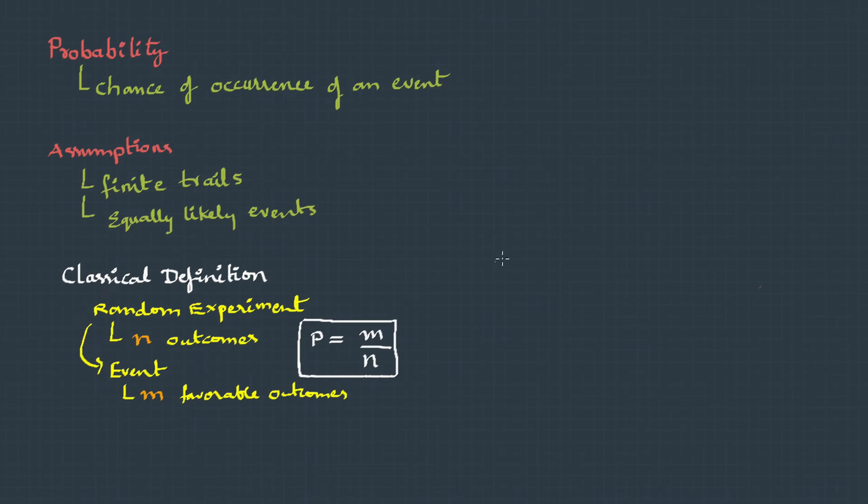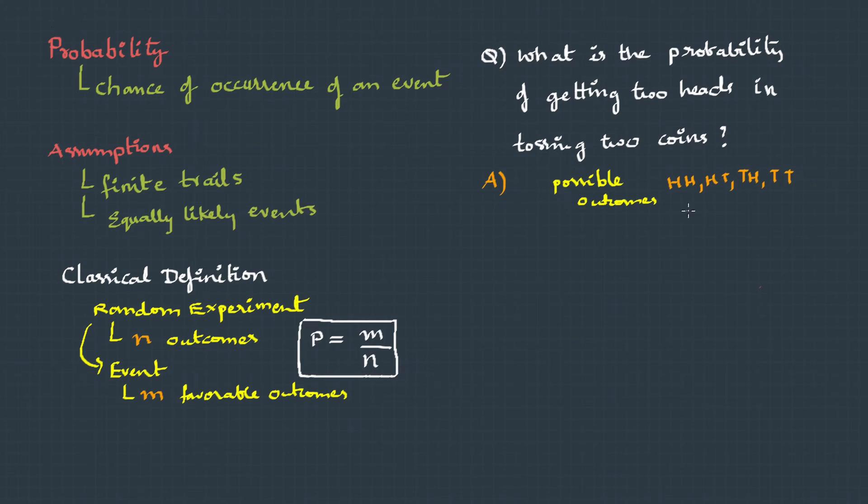Let's take a few examples to understand this. Here's the question: What is the probability of getting two heads in tossing two coins? Here the possible outcomes are either head-head or head-tail, tail-head, tail-tail. The total possible outcomes n is 4.